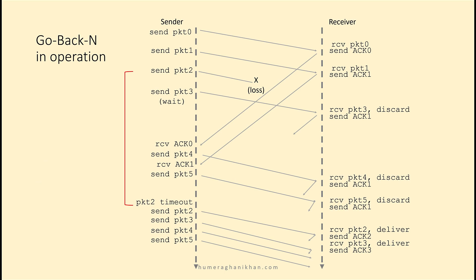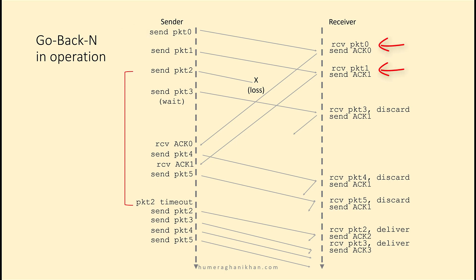Now we will see Go-Back-N in operation. Packets 0, 1, 2, and 3 have been sent on the transmission line without waiting for acknowledgements. Packets 0 and 1 were received correctly and their acknowledgements were released, but packet 2 was lost on the way while packet 3 was received correctly. When packet 3 arrives out of order, since the receiver is waiting for packet 2, it simply discards packet 3 and will only accept packet number 2.